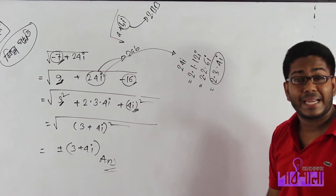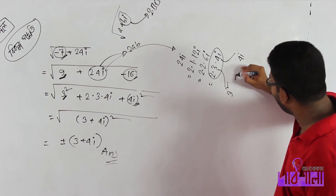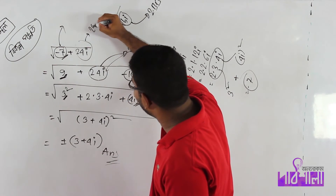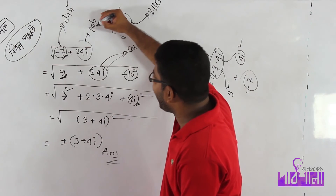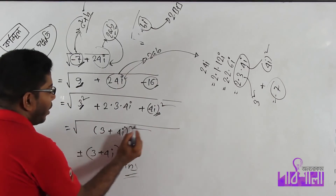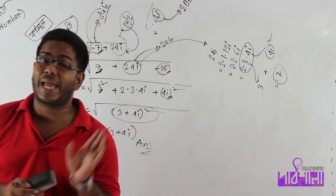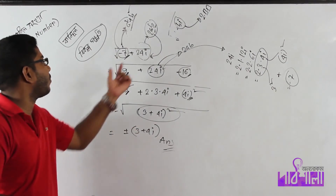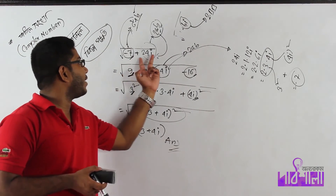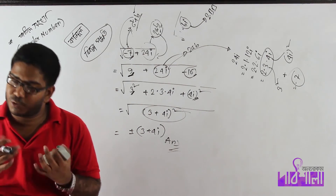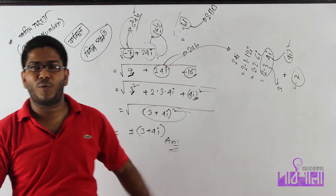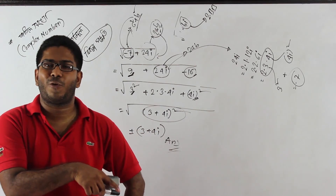Our question is how to write it in 2ab format. The requirement is that 2ab equals 24 and a squared plus b squared equals minus 7. If you choose a squared plus b squared, the ultimate result is a squared plus b squared. Following this process will help you find the correct values and complete the solution.